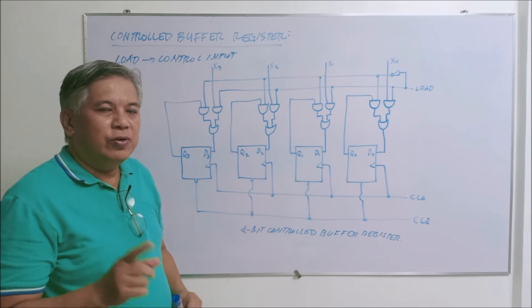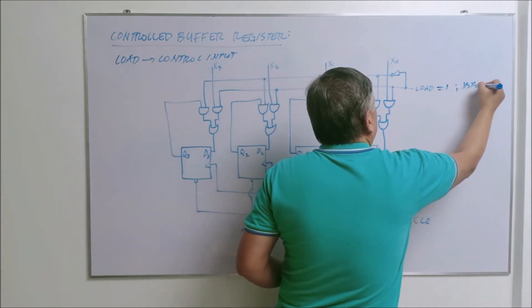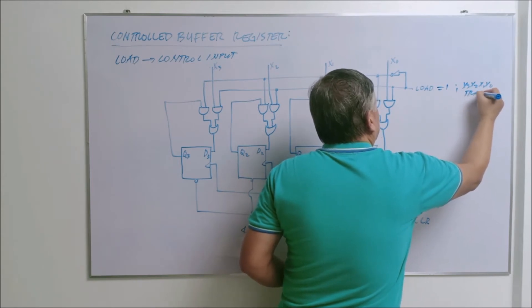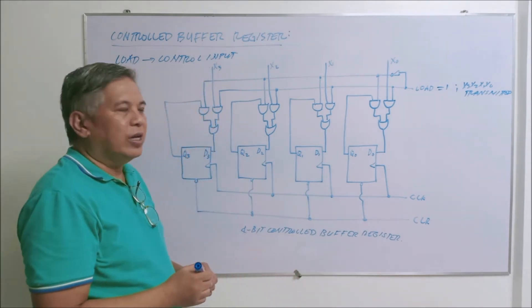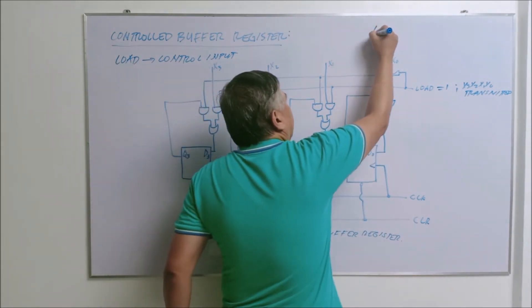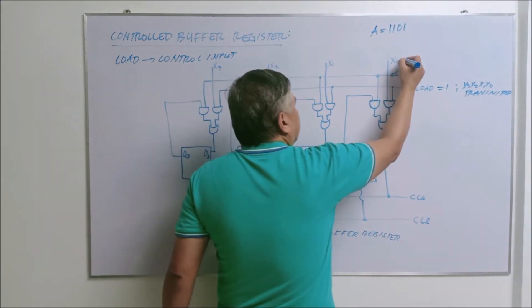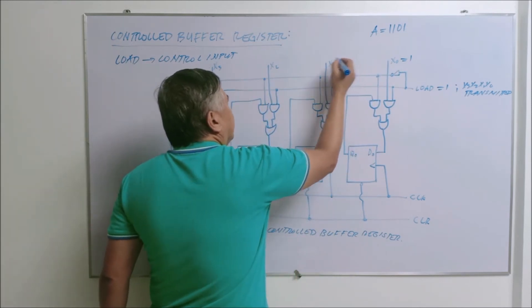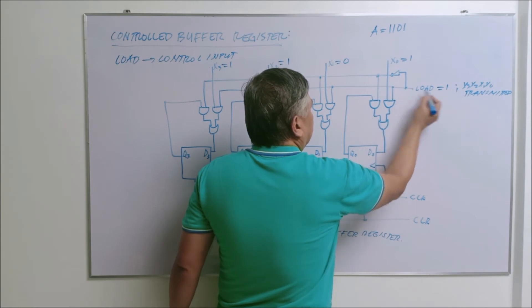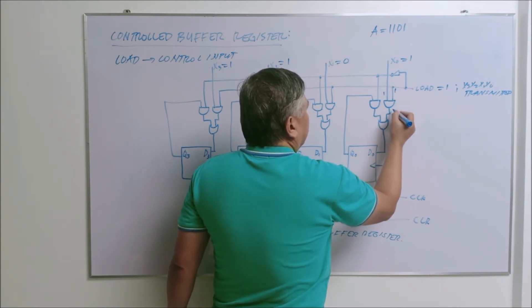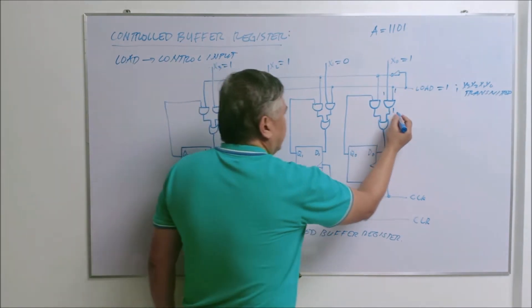There are two conditions of the load: load equal to 1 and load equal to 0. If load is equal to 1, then the value of X3, X2, X1, and X0 can be transmitted. For example, if you have letter A, the ASCII code equivalent is 1, 1, 0, 1. So X0 is 1, X1 is 0, X2 is 1, and X3 is 1. If load equals 1, you have an AND gate output of 1, because all inputs are high — the output is high.